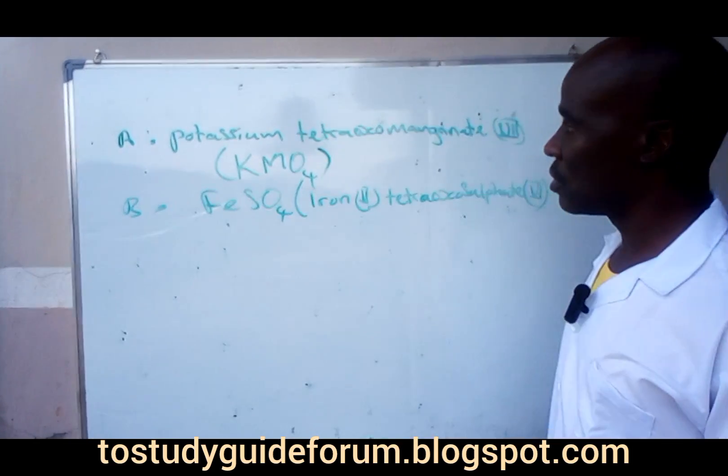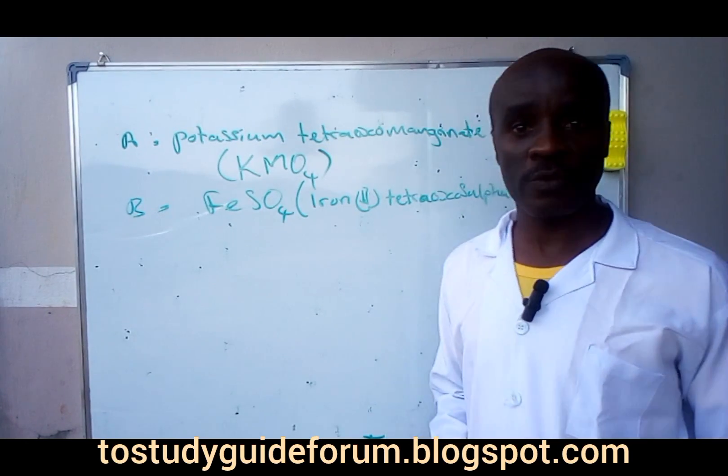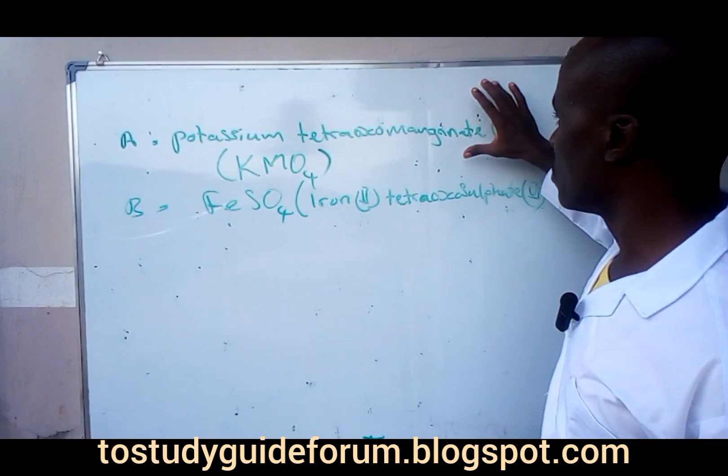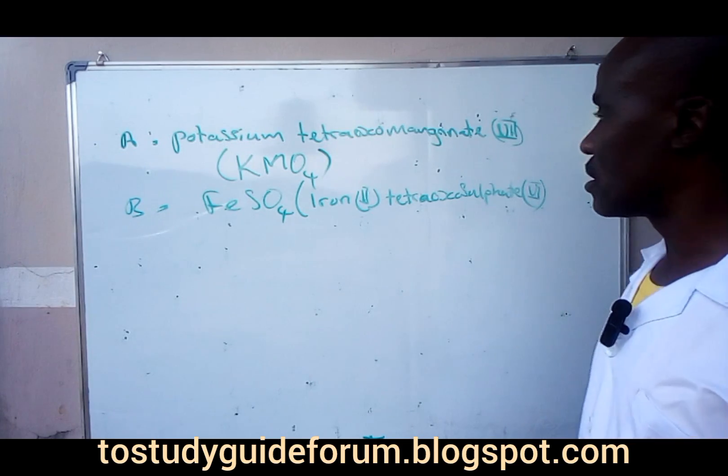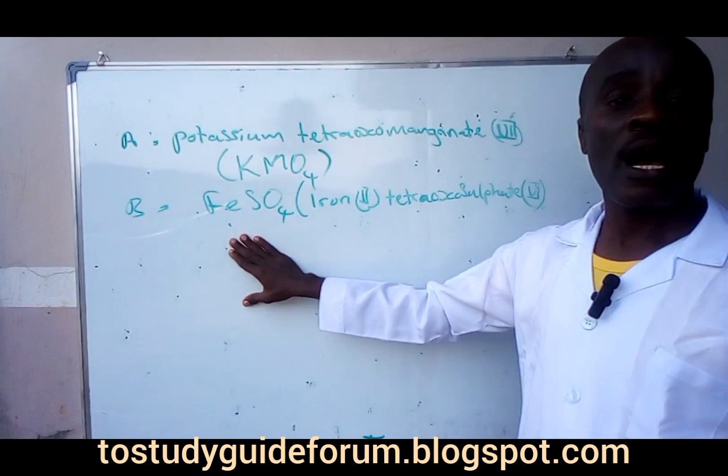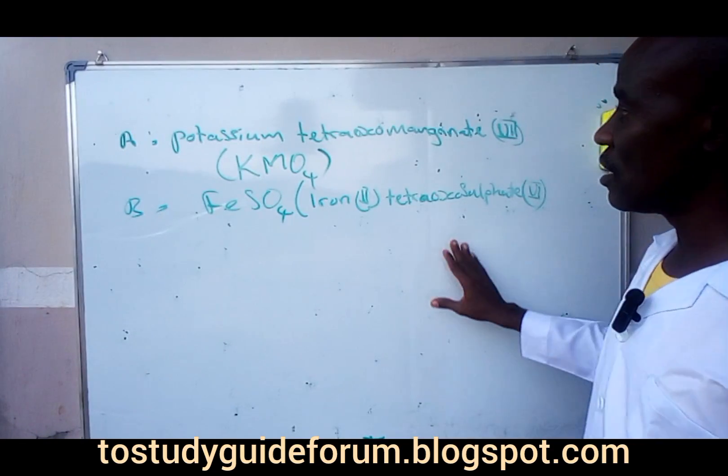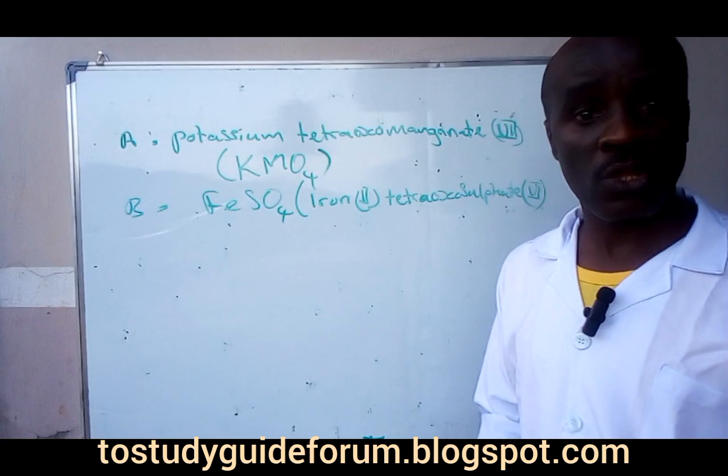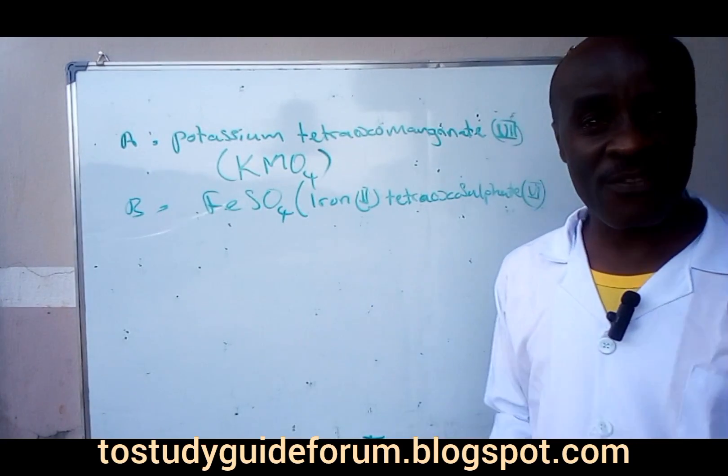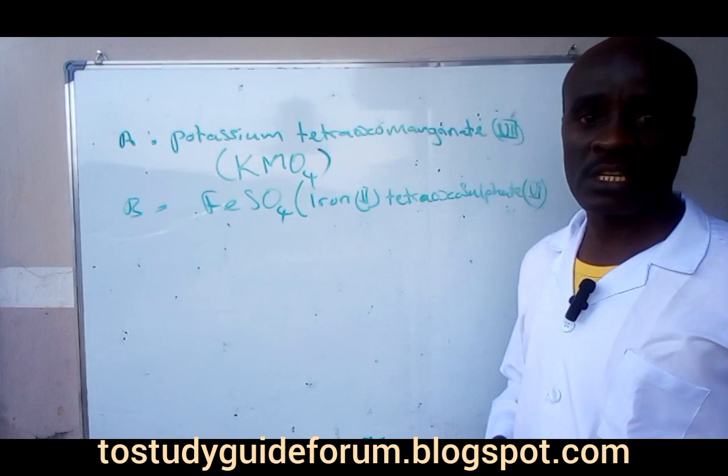The volumetric analysis is going to be a redox reaction. In this redox reaction what we have is potassium permanganate (KMnO4) and iron(II) tetraoxosulfate(VI). In this reaction they don't have any indicator.